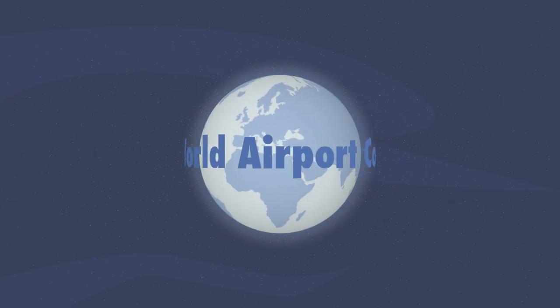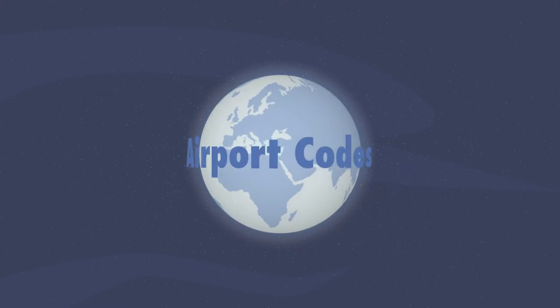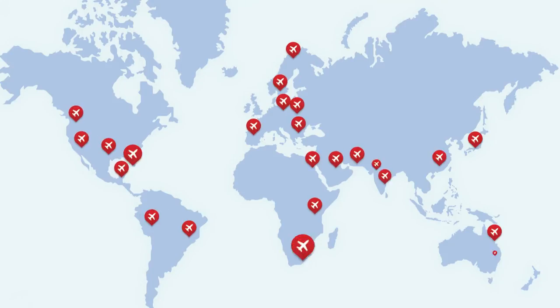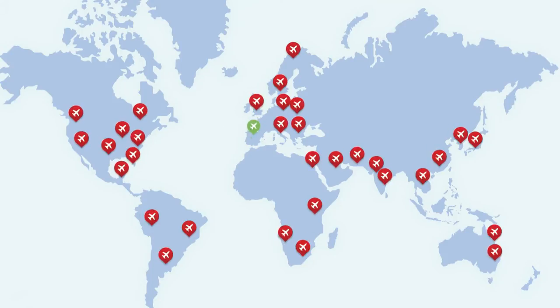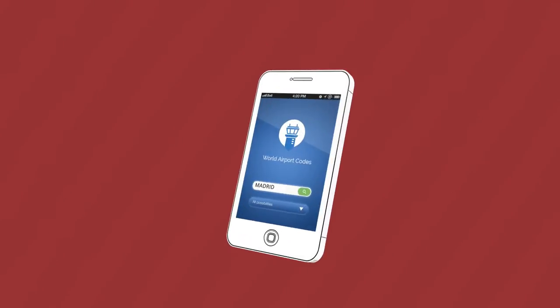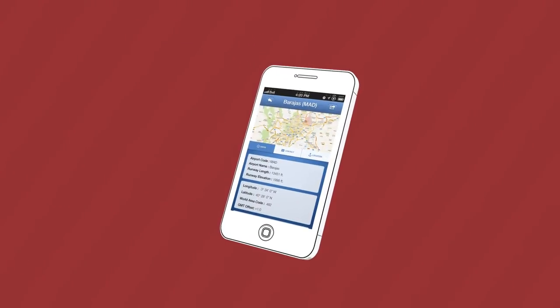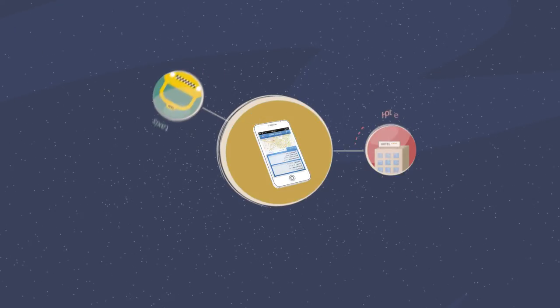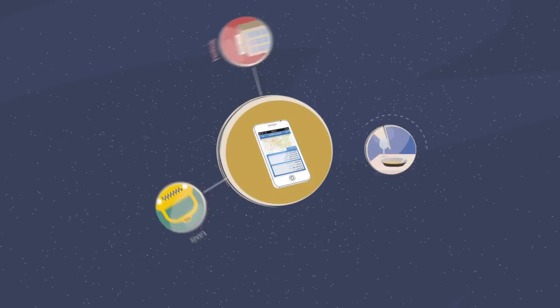World Airport Codes has information on every airport in the world and can help you quickly find the airport you're looking for. Just enter the name of the airport or the location. World Airport Codes will find you all the information you're looking for, including taxis, hotels and restaurants.